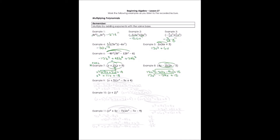In example 9, we multiply a binomial times a trinomial — FOIL will no longer work. We take each of the two binomial terms and multiply by each of the three trinomial terms, doing six multiplications. x times x cubed gives x to the 4th; x times negative 3x gives negative 3x squared; x times 4 gives 4x. Then multiplying by 5: 5 times x cubed gives 5x cubed; 5 times negative 3x gives negative 15x; 5 times 4 gives positive 20.